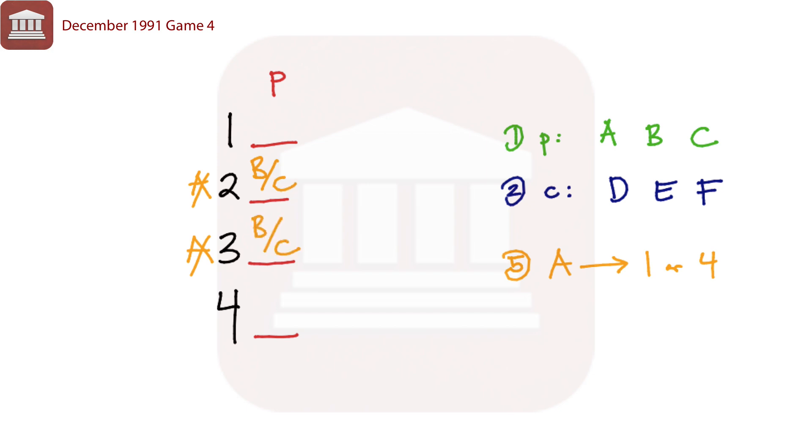The sixth condition tells us that Dave will only fly in either plane two or plane three. So Dave can't be first, can't be fourth. So you notice what that means is that Dave must be two or three and Dave will be flying with B or C.